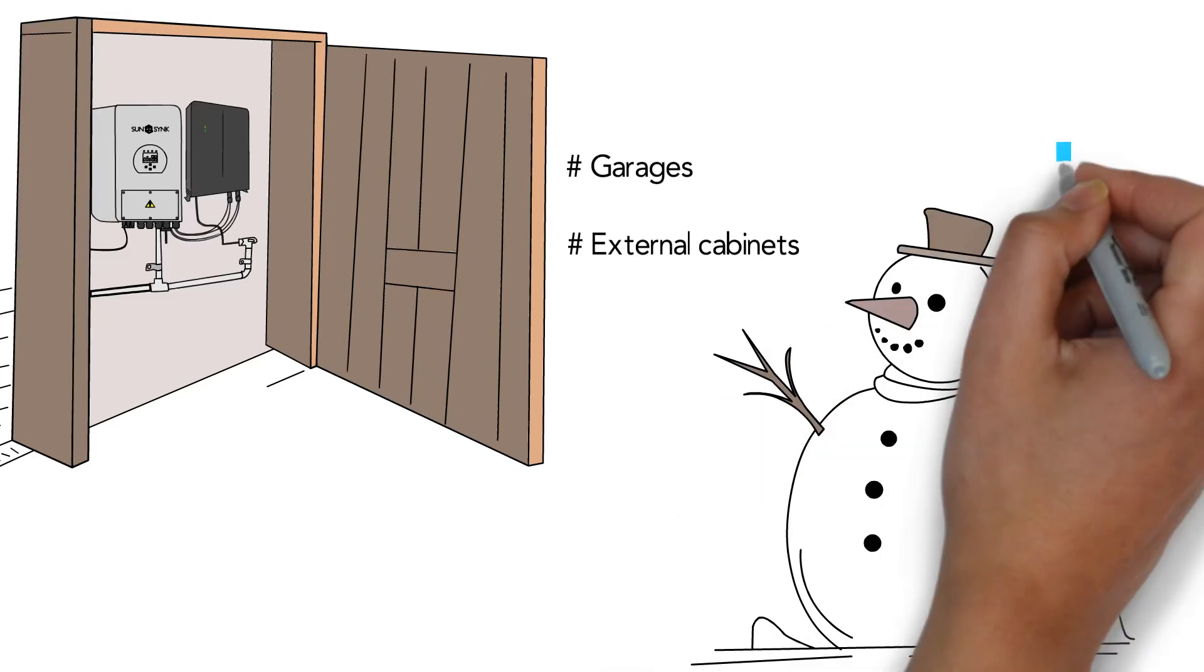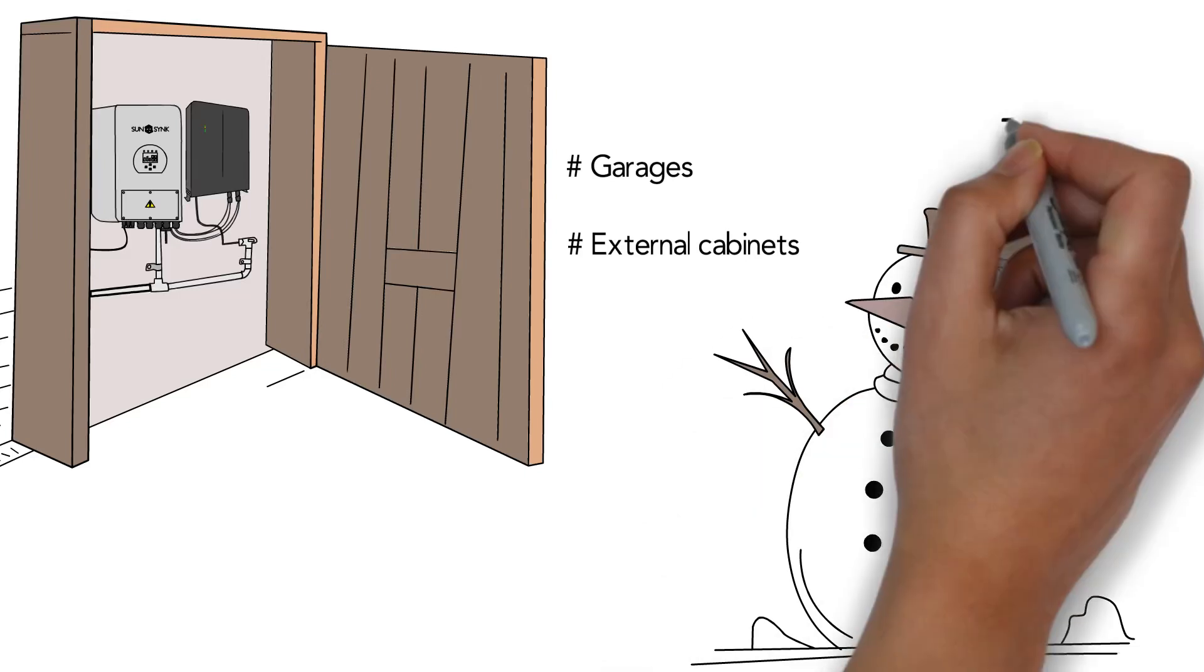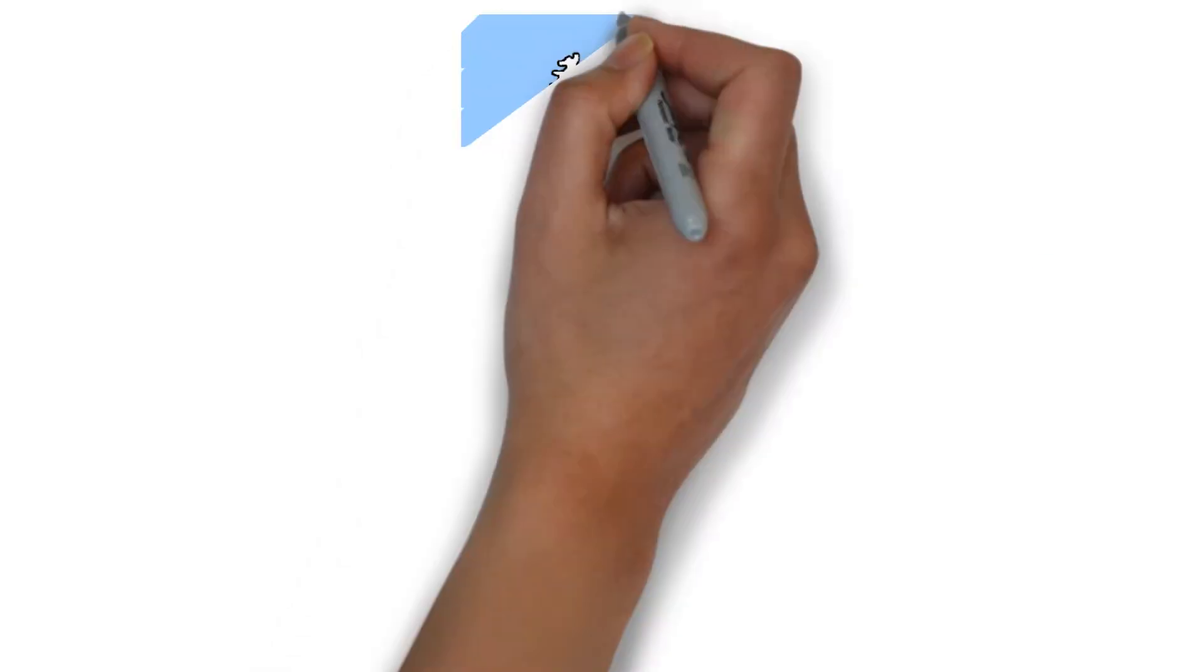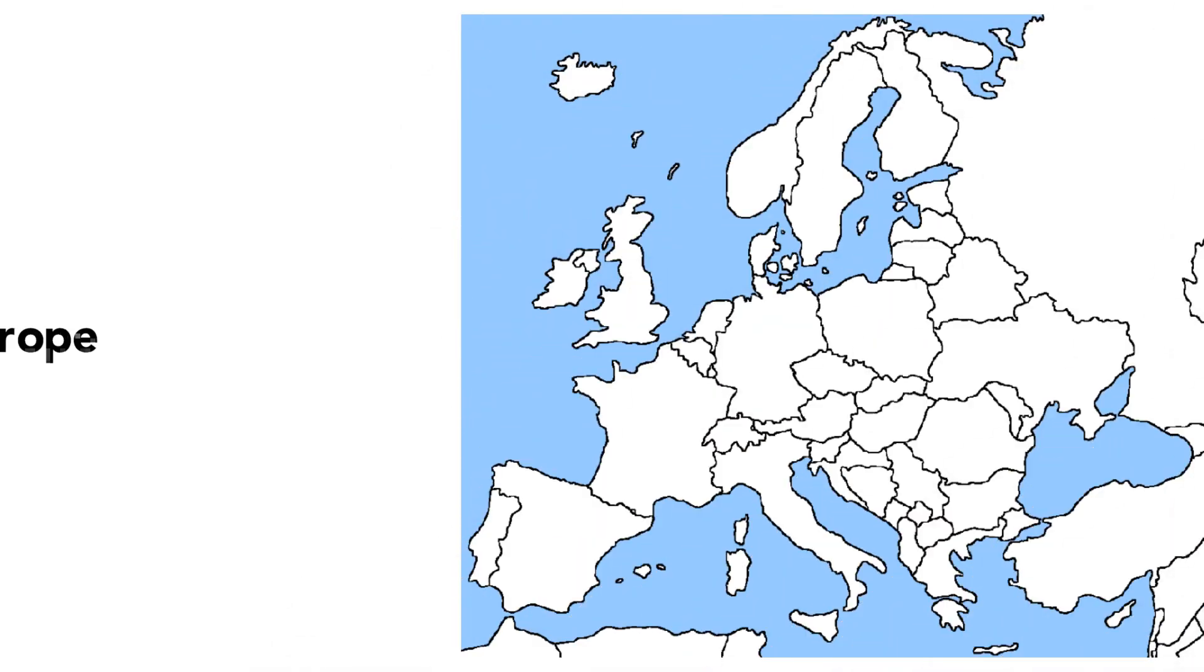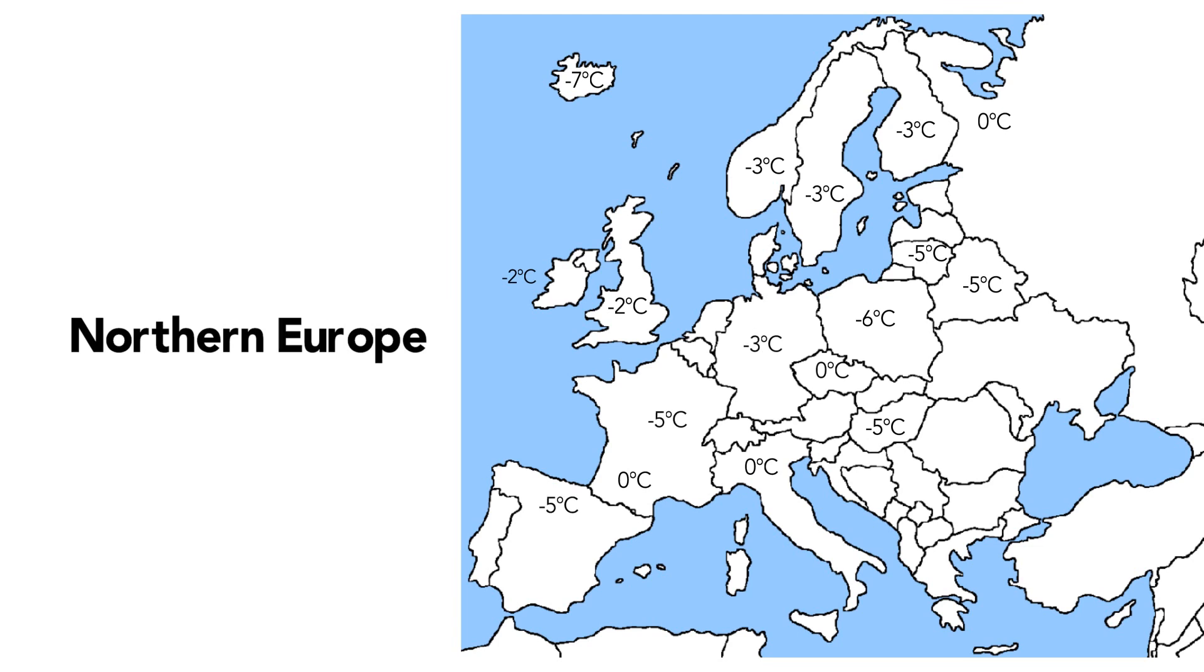These sun sink batteries are designed to operate in temperatures as low as minus 20 degrees Celsius. In Northern Europe, where winter temperatures can drop below 10 degrees Celsius, the storage properties of lithium batteries are reduced due to the coating of lithium ions on the anode surface, which hampers the flow of electricity and the battery's capacity.